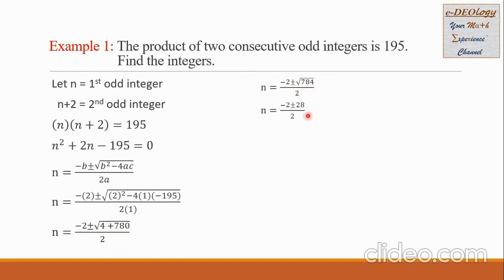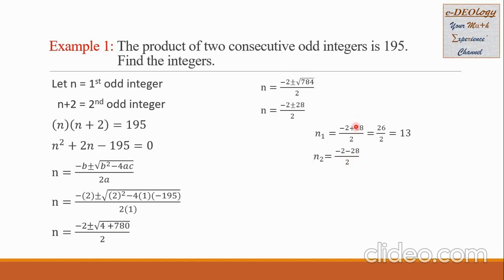We split the plus and minus sign to get two values for n. For n sub 1: negative 2 plus 28 over 2 equals 26 over 2, which equals 13. For n sub 2: negative 2 minus 28 over 2 equals negative 30 over 2, which equals negative 15.